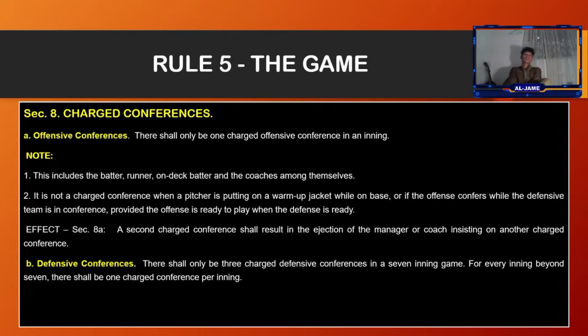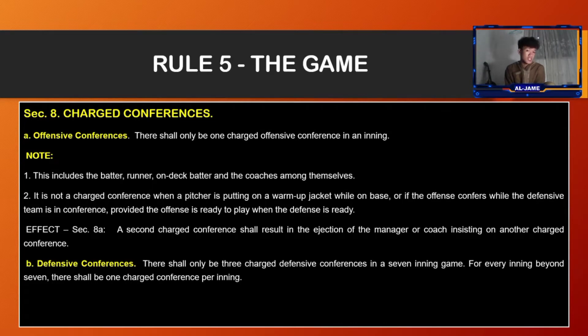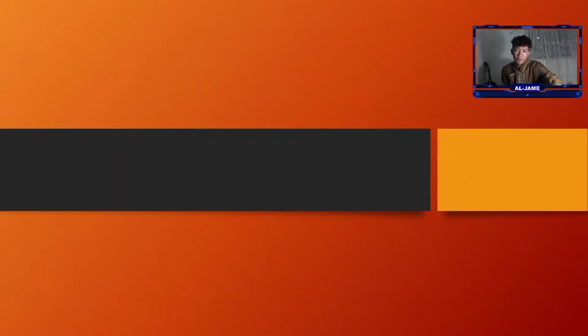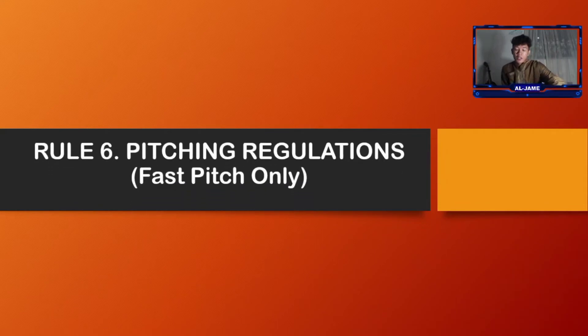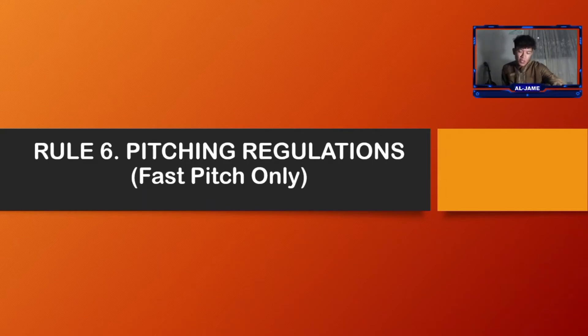Letter B, defensive conferences: there shall be only three charged defensive conferences through the seventh inning. For every inning beyond seven, there shall be one charged conference per inning. Now let's proceed to rule number six, pitching regulations, fast pitch only.